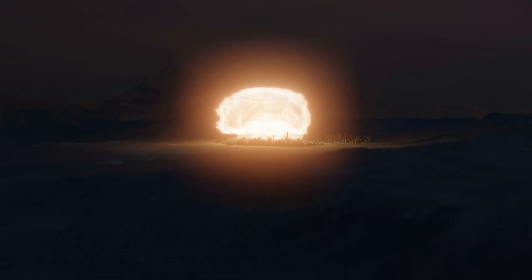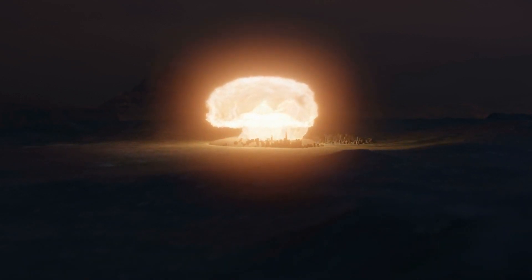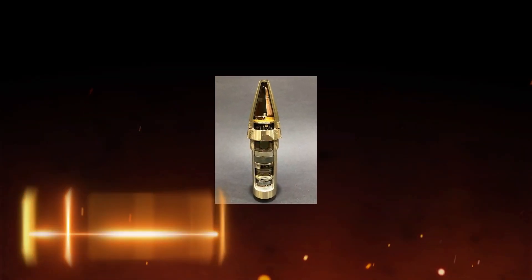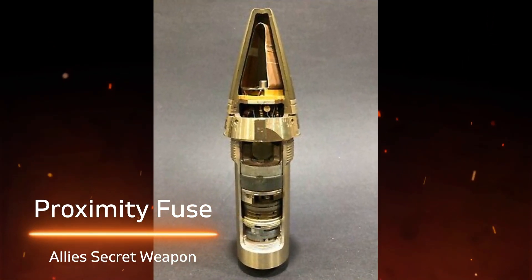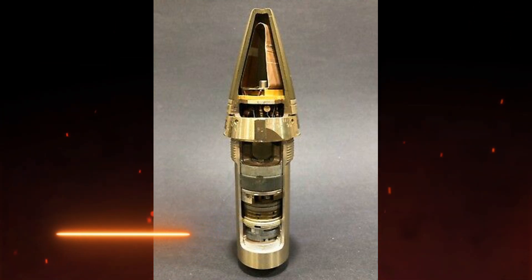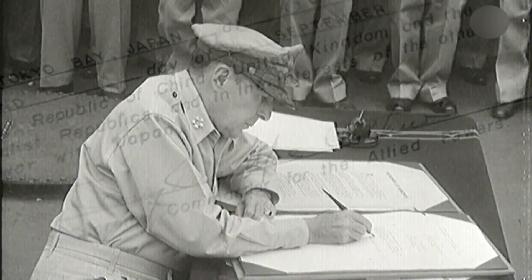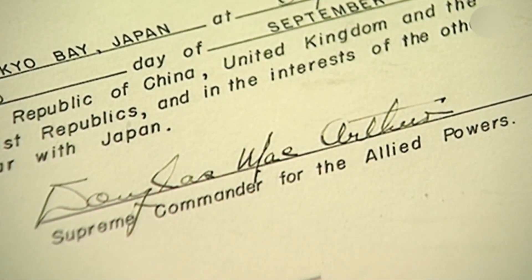It has been said the nuclear bomb ended World War II, but not many know that the small device called Proximity Fuse actually won the war for the allies. So what is a Proximity Fuse and how did it change the outcome of World War II in favor of the allies? Let's find out.